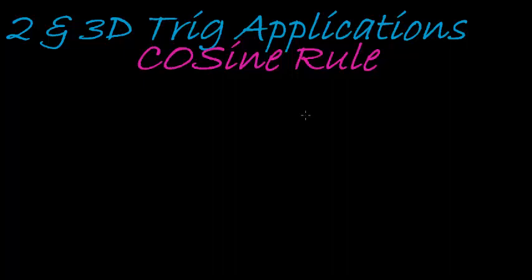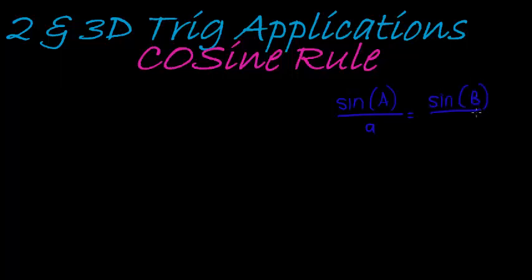This time we're looking at the cosine rule, after we've already looked at the sine rule which said that sine of any angle divided by its opposite side length is equal to sine of any other angle divided by its opposite side length. To use this we need pairs - an angle and its opposite pair, and another angle and its opposite pair. One of these is allowed to be unknown; the other three must be known.